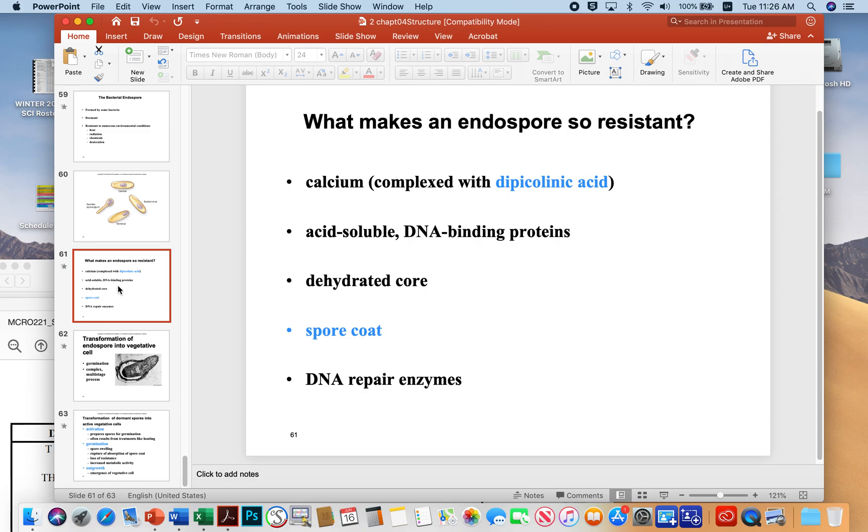What makes the spore resistant? There's lots of different layers. The layers are made up of calcium and dipicolinic acid, which gives them recalcitrance, makes them strong. There's acid-soluble DNA binding proteins inside the spore to protect the DNA in case anything, heat or any of that stuff, really affects the spore outside. There's a dehydrated core. It's like astronaut food in there. There's a lot of dehydrated materials, so it's not likely to spoil in any way. Then there's additional coats around the spore that give extra rigidity, and there's DNA repair enzymes in there. If anything does happen to damage the DNA, they can try and fix it.